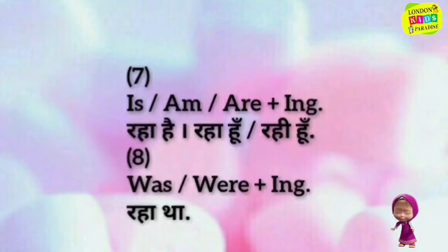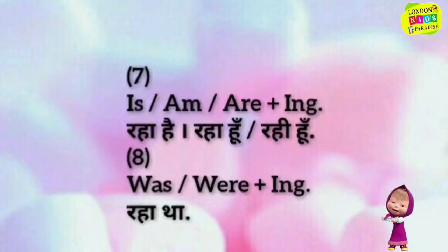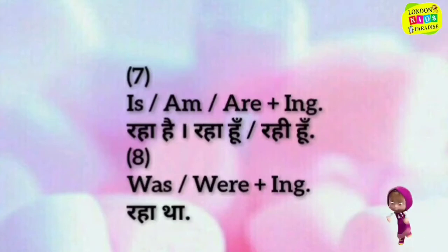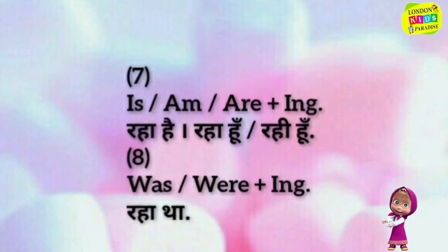Is / am plus '-ing' — raha hai, raha hoon, rahi hoon. Was plus '-ing' — raha tha.